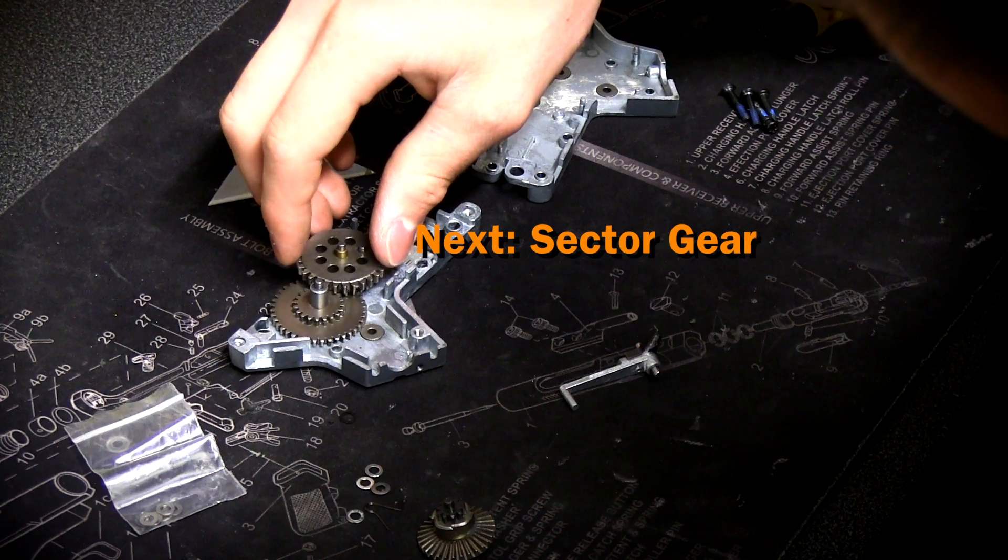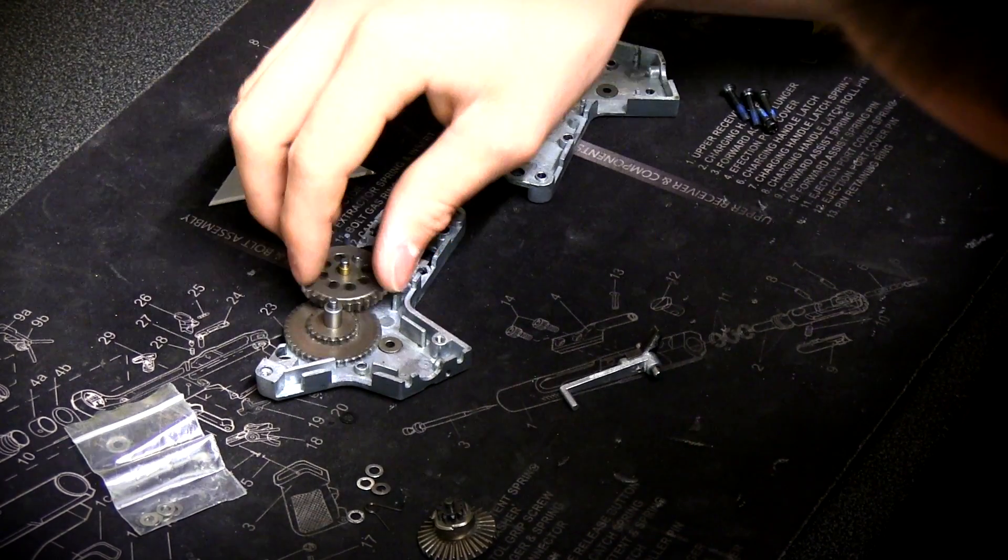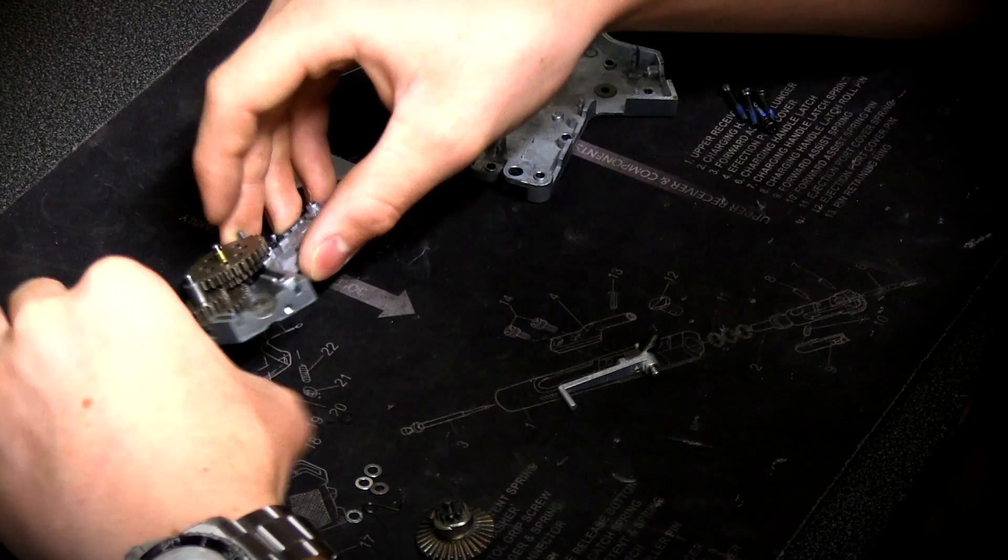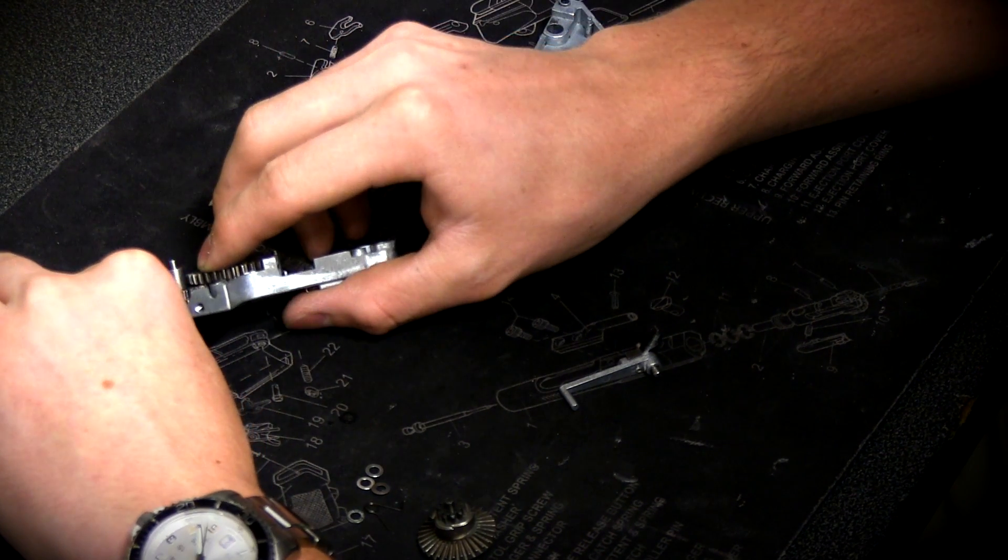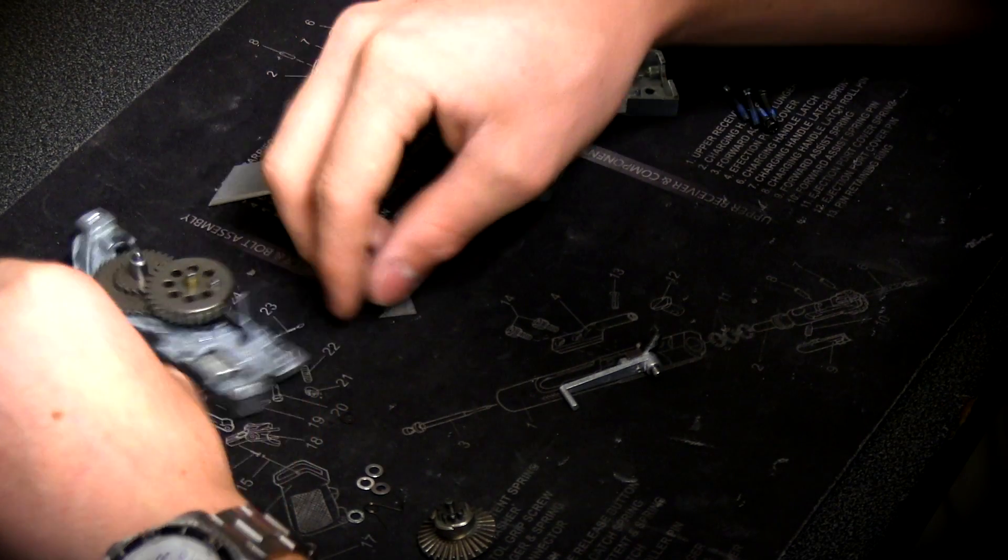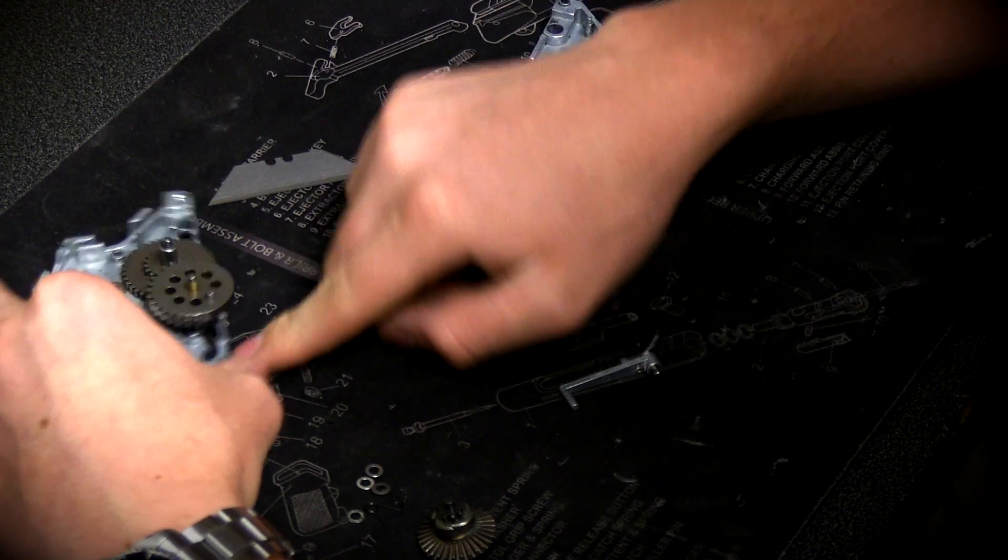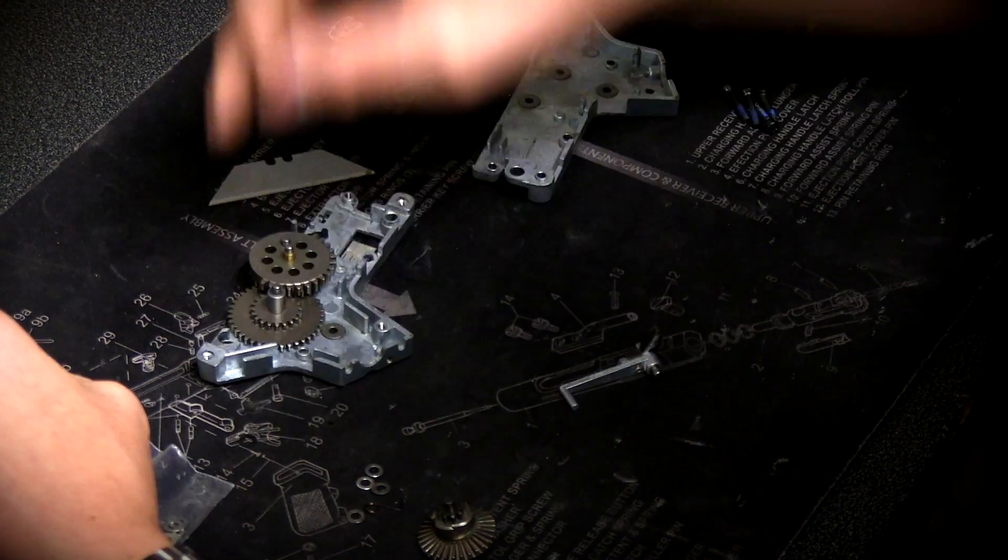Next, we'll go with the sector gear. The big thing with the sector gear is we want to make sure we can shim as low as possible and keep it in contact with the spur gear teeth without rubbing on the lower face of the spur gear. We also want to make sure that we're not rubbing on the face of the cut-off lever, causing extra wear and resistance there.